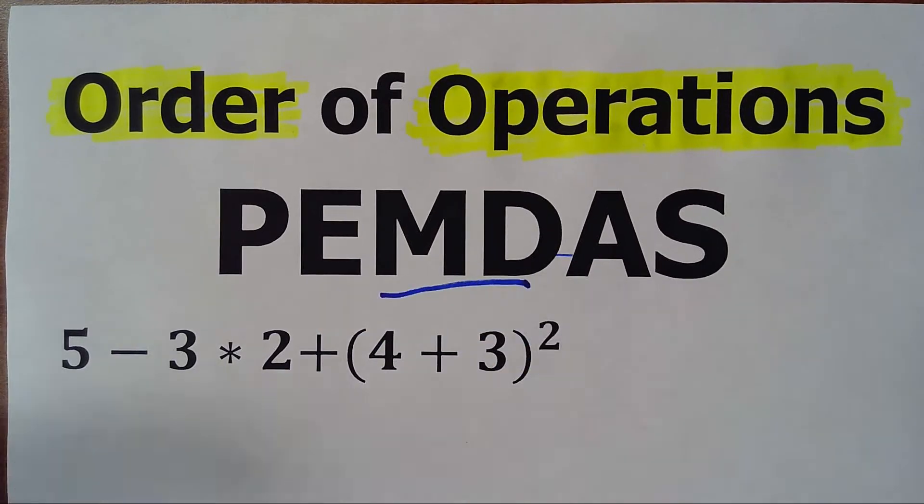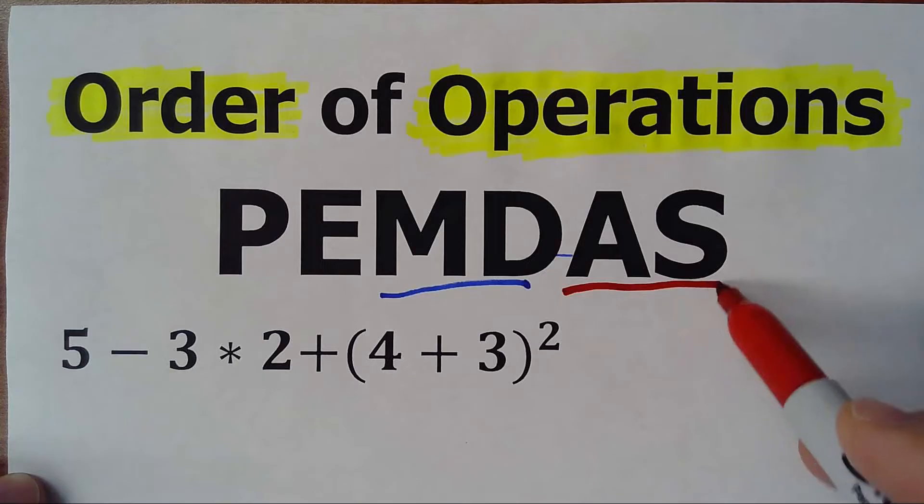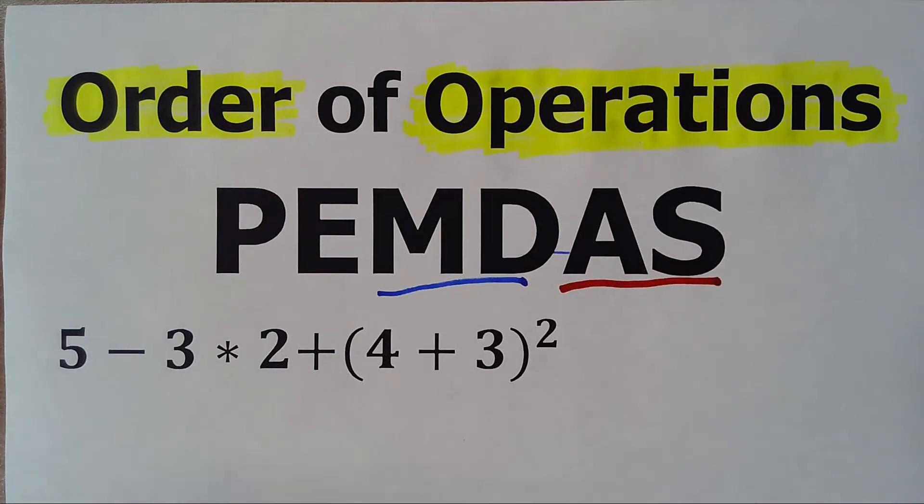Now, multiplication and division has the same order of priorities, so we're going to do it from left to right. The same with addition and subtraction, the same order of priorities, so we're going to do it from left to right.